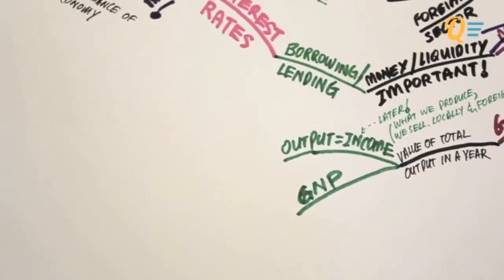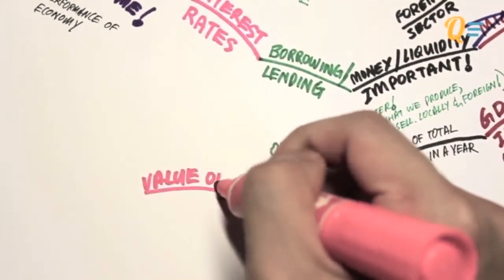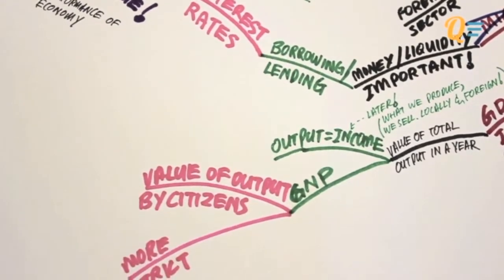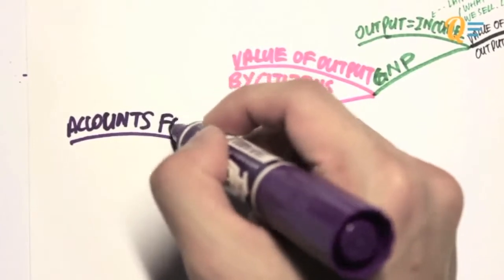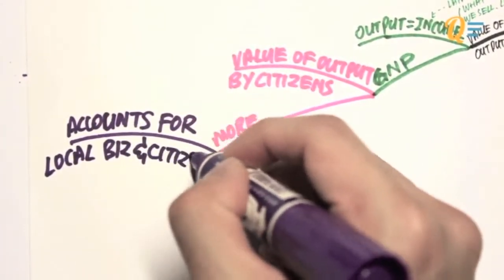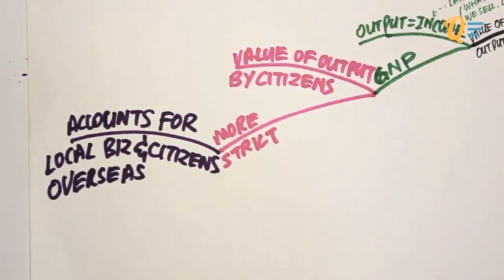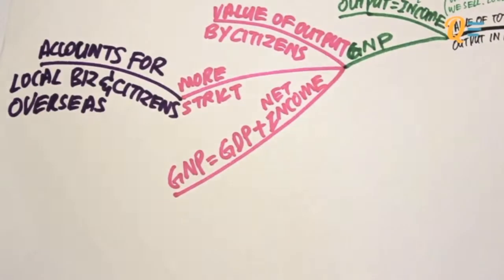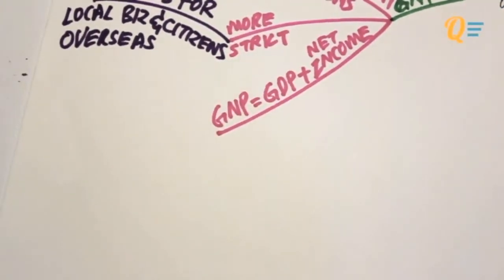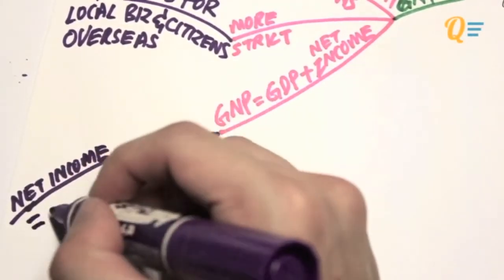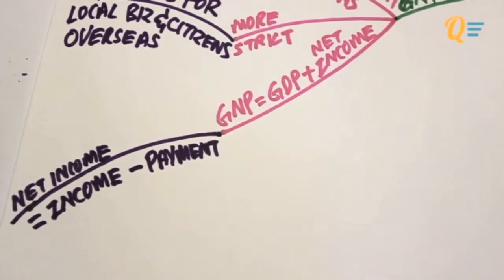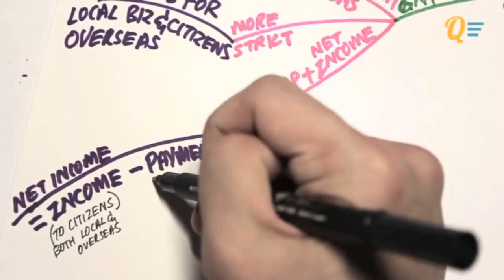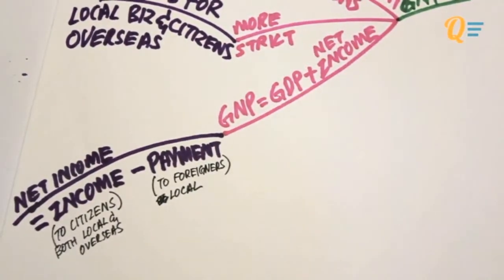Another way of measuring output is actually the GNP, which stands for Gross National Product. This is defined as the value of output by citizens of that particular country. This is a more strict way of measuring output because it accounts for local businesses as well as citizens who are located overseas. To calculate your GNP, you take your GDP and add your net income. Net income is calculated as total income minus total payments. Income here refers to income earned by citizens or businesses located in this country or overseas, while payment refers to payments to foreigners who are located within that country itself.